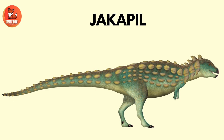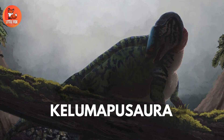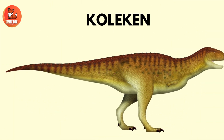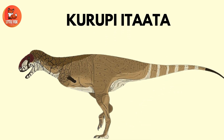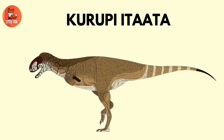Number 68: Kalu Mapu Sora. Number 69: Kolkain. Number 70: Kurapayatata.